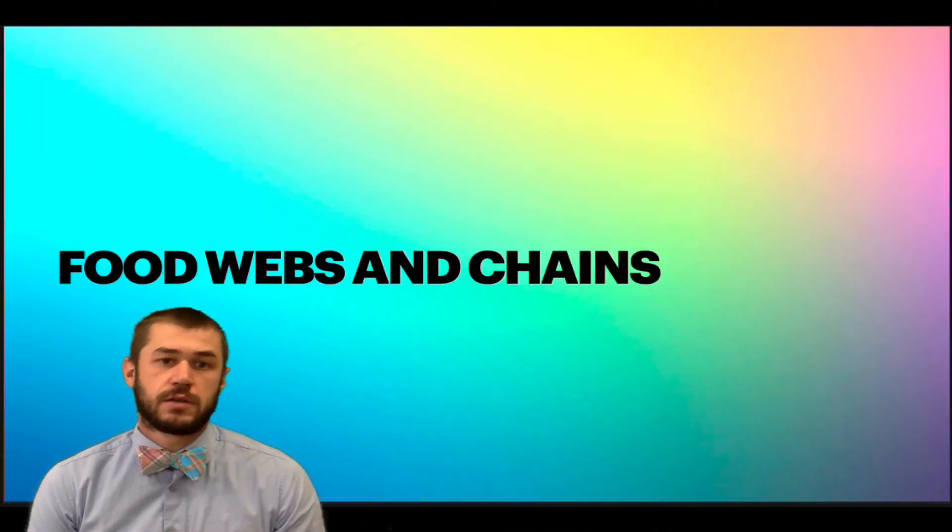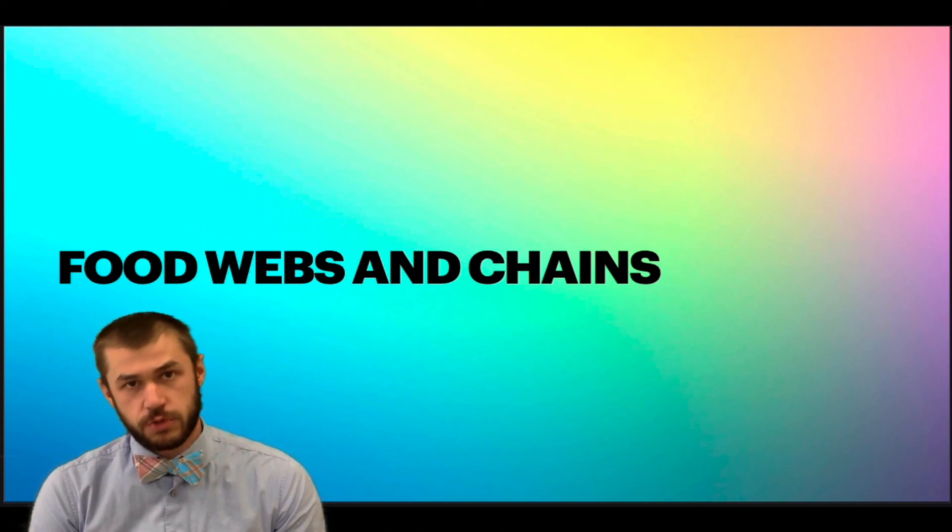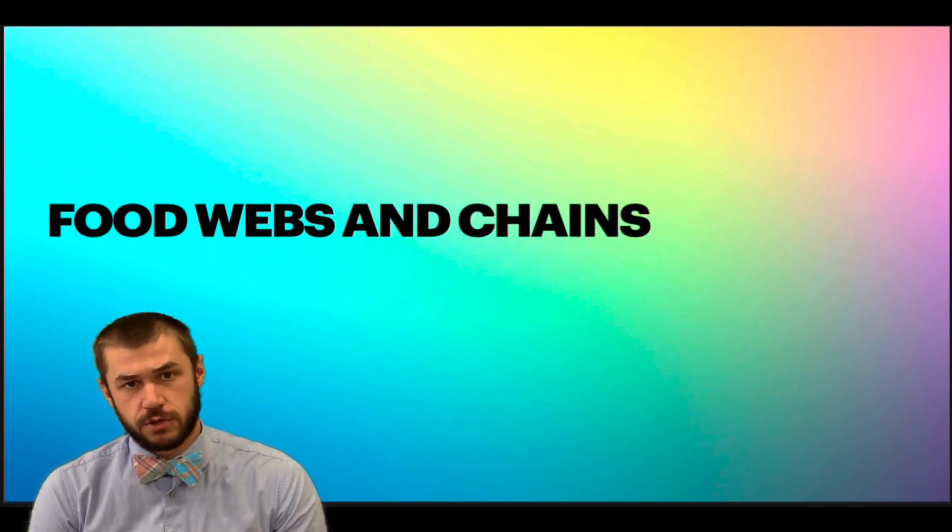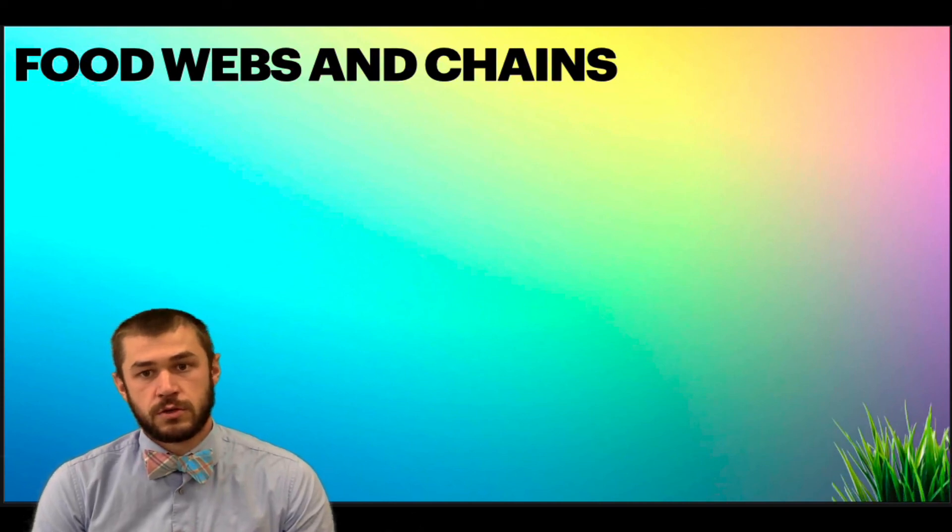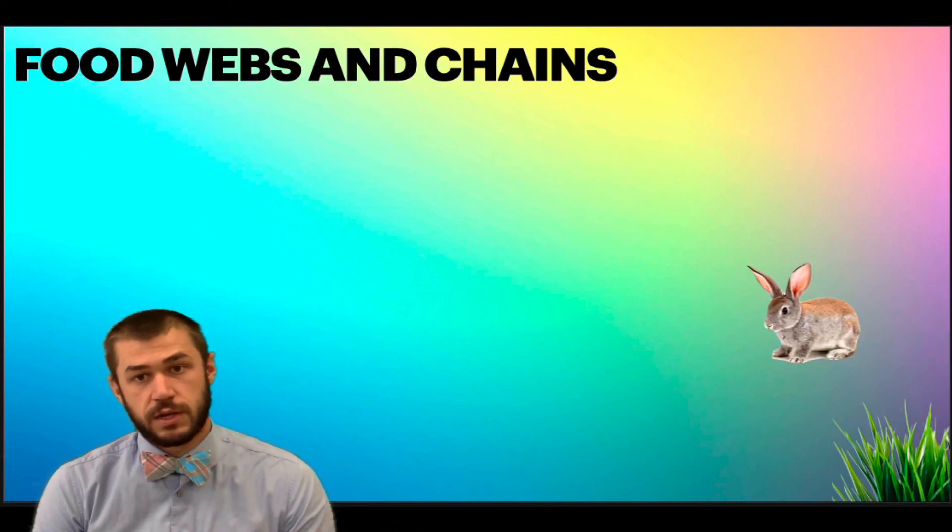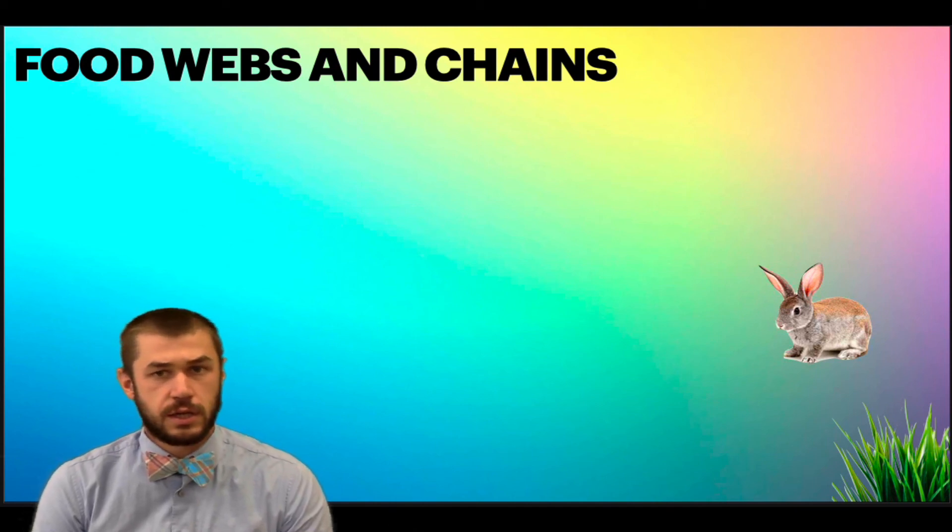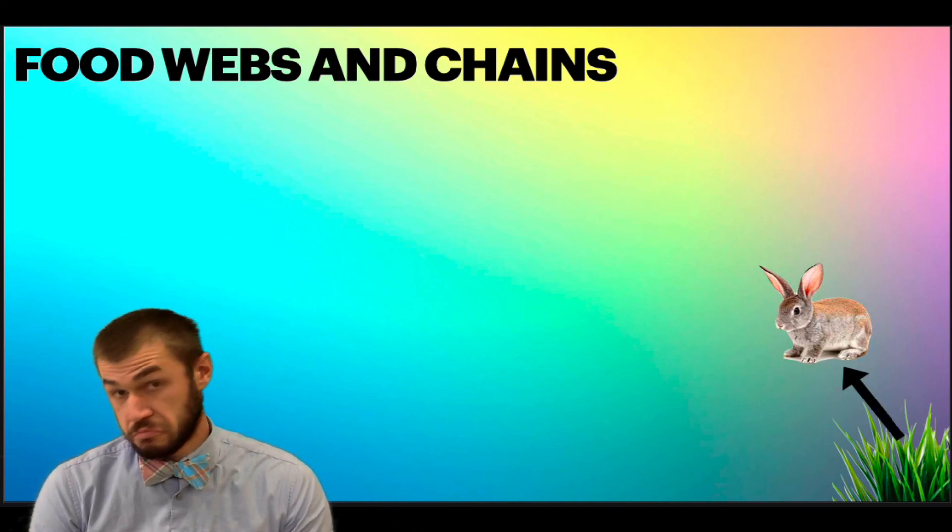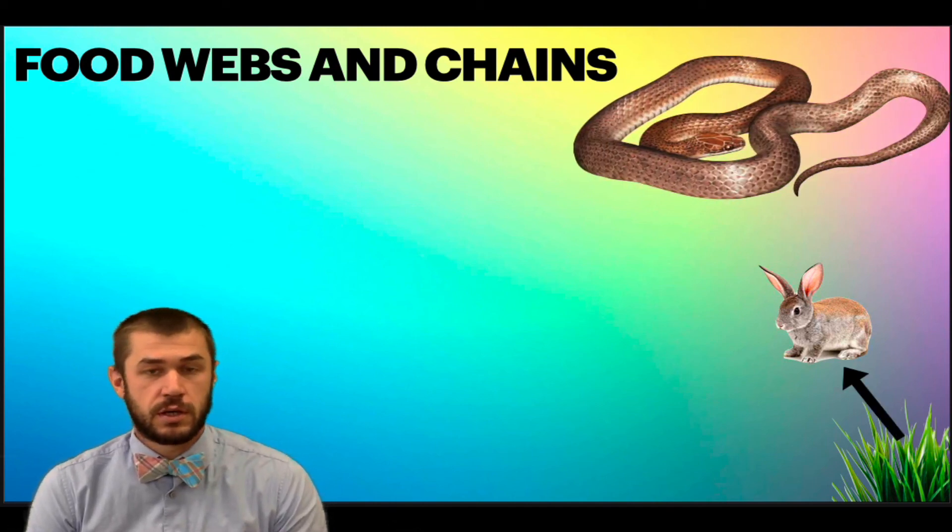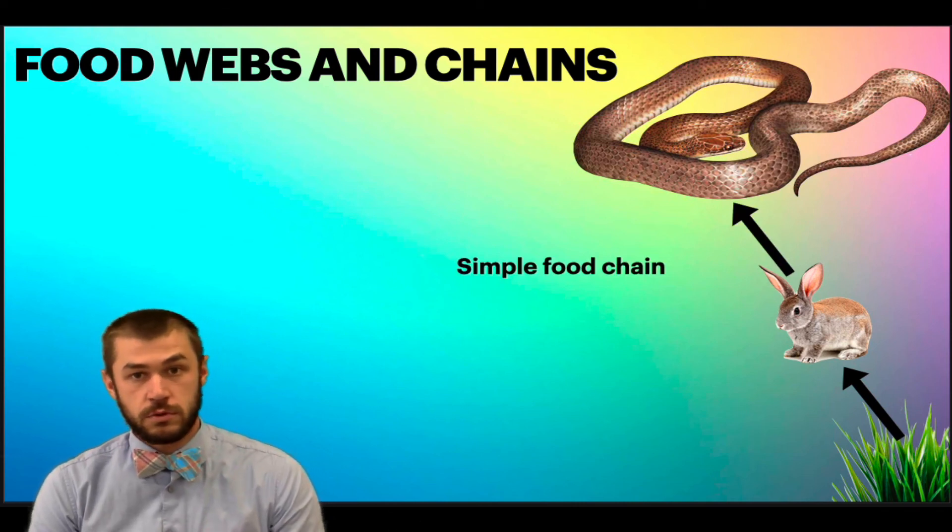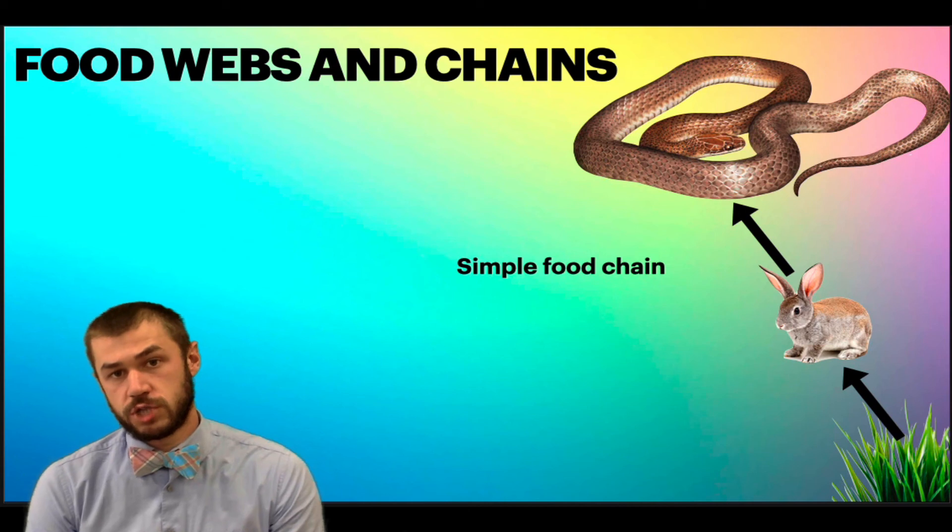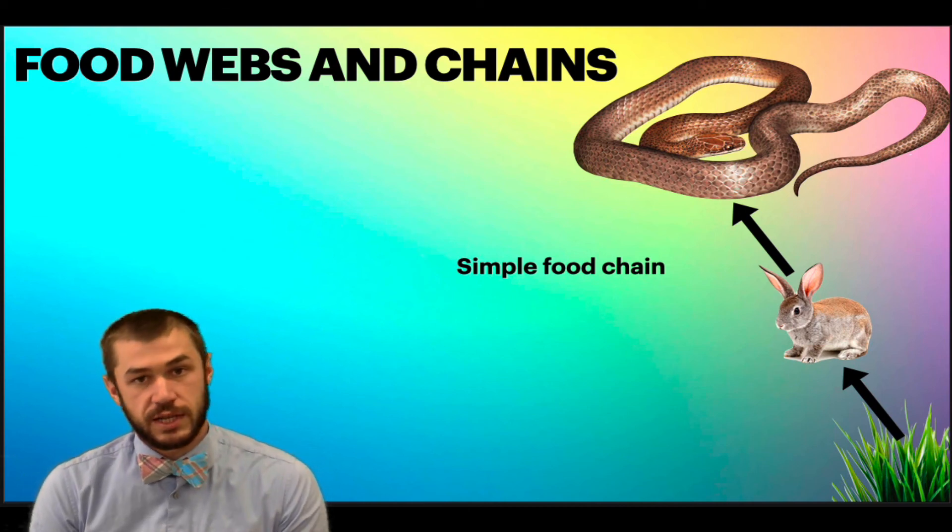So let's start by looking at food webs and food chains, which most of you are probably already familiar with. We'll start at the bottom with grass, which is eaten by rabbits, and rabbits might be eaten by a snake. So this is a really simple food chain, and most of you have probably been looking at these for a while.